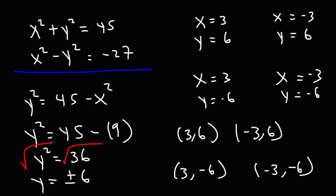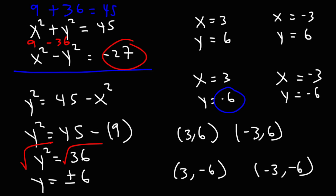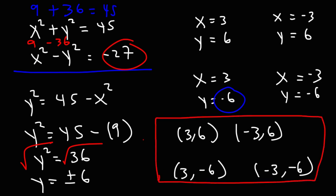All four solutions work because squaring 3 or negative 3 always gives 9, and squaring 6 or negative 6 always gives 36. So 9 plus 36 always equals 45, and 9 minus 36 always equals negative 27, regardless of the signs. All four solutions are valid. Now you know how to solve a system of nonlinear equations.